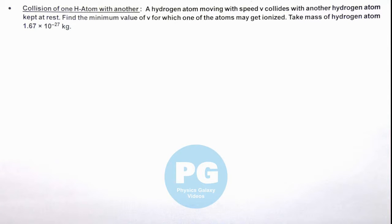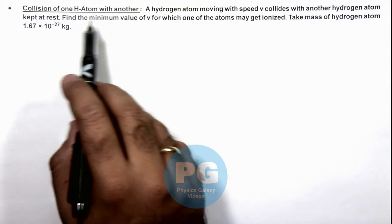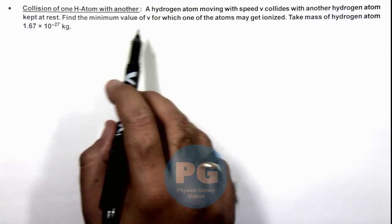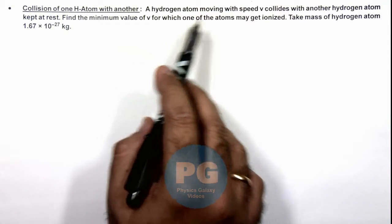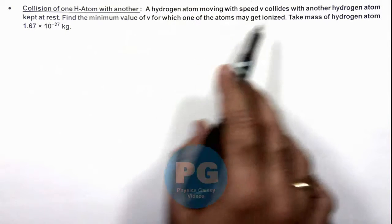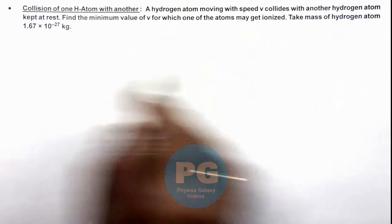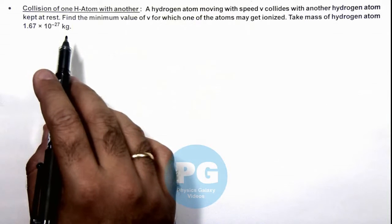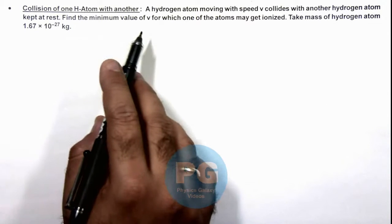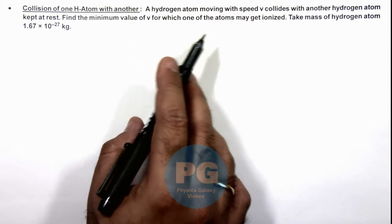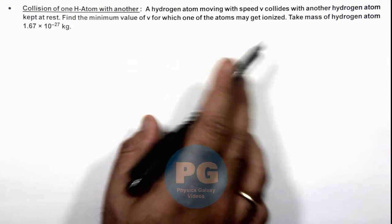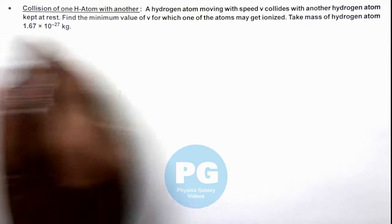In this illustration we'll analyze the collision of one hydrogen atom with another. Here we are given that a hydrogen atom moving with speed v collides with another hydrogen atom kept at rest, and we are required to find the minimum value of v for which one of the atoms may get ionized. We can take the mass of hydrogen atom as given here.